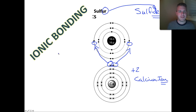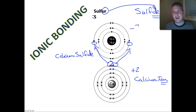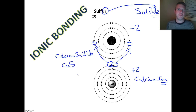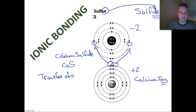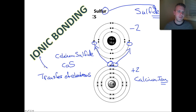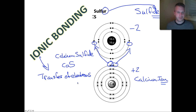What we actually end up having is calcium sulfide that forms. These electrons are actually transferred — sulfide ion has a charge of negative two. We call this CaS, calcium sulfide. With ionic bonding, this is important to remember: there is a transfer of electrons, which is different from molecular compounds. In ionic compounds, electrons are transferred — they are not shared.